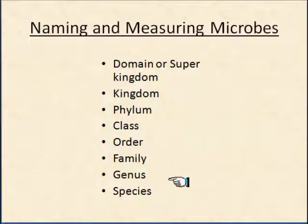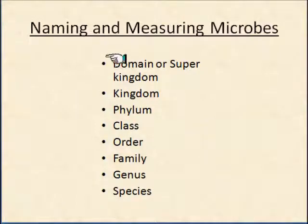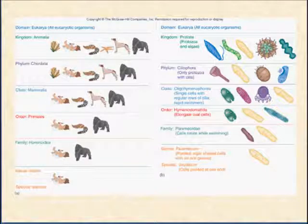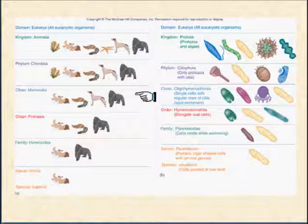It is the genus and species system that we are most familiar with. We're just going to look at Homo sapiens, or man. If you look at this chart, we fall under the domain of Eukarya — that is all eukaryotic organisms, those whose cells have nuclei. Within that we fit into the kingdom Animalia, as opposed to Plantae or the other choices.